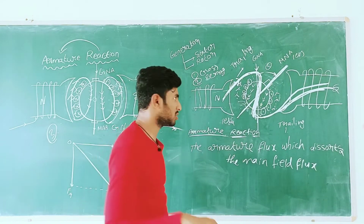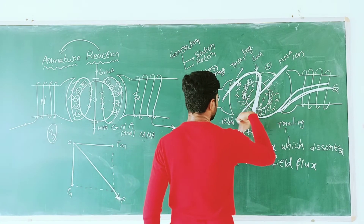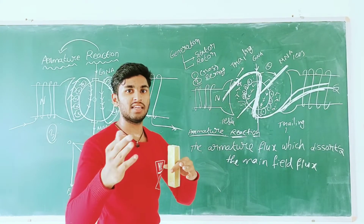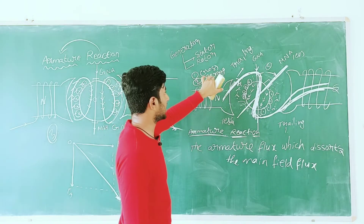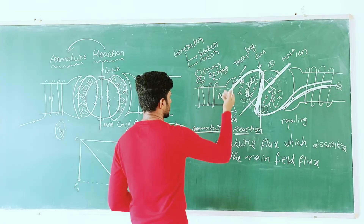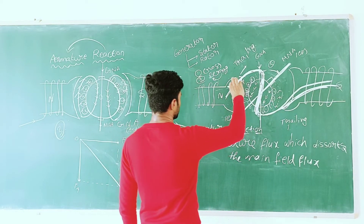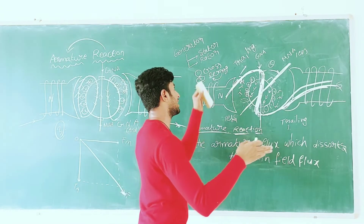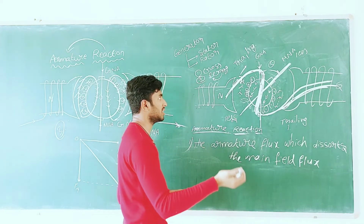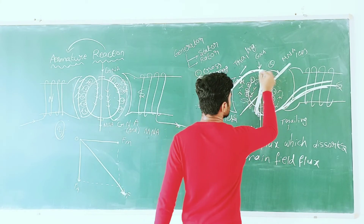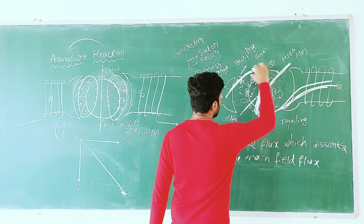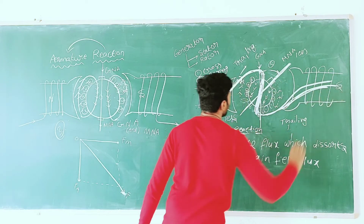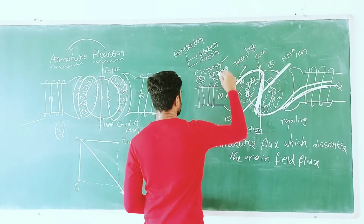Demagnetization means that the main flux is weak. So if you look at demagnetization — what is the distortion? Distortion means that the flux is different. So if you look at the result of the flux, the flux is different. If the flux is different, the flux will be distorted. So if you don't have any flux, you don't have any flux in the south pole. So: cross-magnetization and demagnetization.